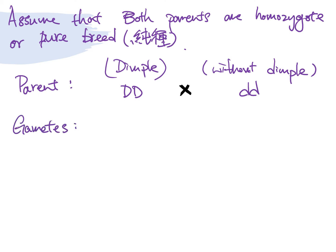So for the big D, big D parents, dimples parents, they are going to only form one type of gamete, that is the big D. For the parents without dimples, they should only form one type of gamete in here, small d.